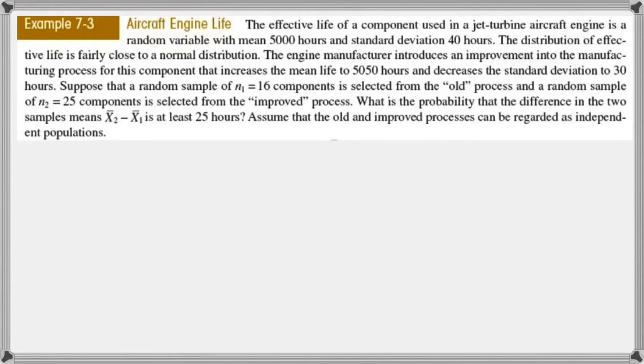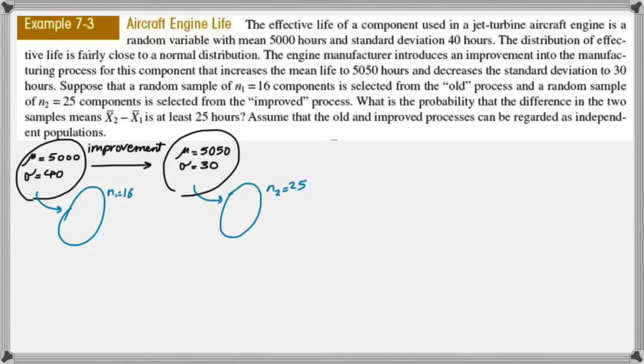Now let's get back to the example. It says the first average is 5,000, and the σ is 40, then the improvement causes that the μ goes to 5,050, and σ becomes 30. So the example says that we take a sample of 16 from the old and 25 from the improved, and we want to know what is the probability that x̄₂ minus x̄₁ is greater than or equal to 25.